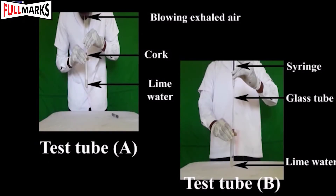Procedure: Take some freshly prepared lime water in two test tubes. Fit a cork with holes in test tube A. Exhale air into the tube and record your observations. Observation: In test tube A, the lime water turns milky. Conclusion: The exhaled air contains a lot of CO2, which turns lime water milky. This proves that during respiration, we exhale CO2 gas.